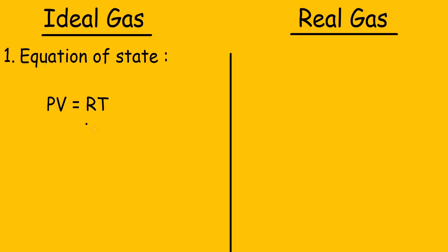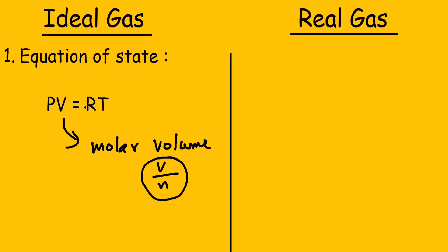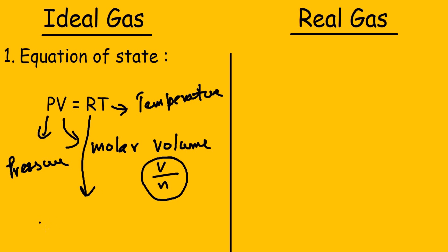In some cases you might see PV equals nRT, but here this volume is molar volume. Because it is molar volume, I have taken n to the left-hand side, giving PV equals RT. Here P is the pressure, T is the temperature, and R is the universal gas constant.